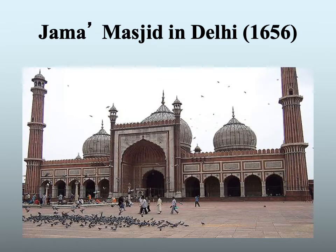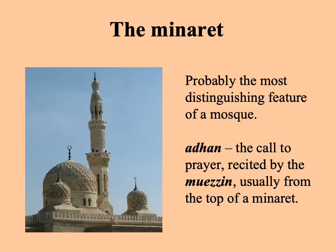The Jammah Masjid in Delhi is recognizable as a mosque — it has the dome, the minarets, and so forth — but in some ways very distinct with these kind of onion shapes. Probably the most common feature in a mosque would be the minaret, and the minaret is the place from where the call to prayer is made — the adhan — recited by the muezzin five times a day. These are from the five pillars of Islam: you're supposed to pray five times a day at set times, so you need someone to tell you when that is.